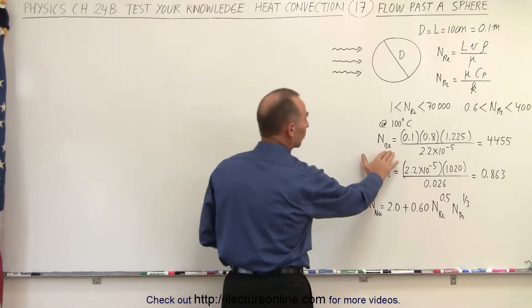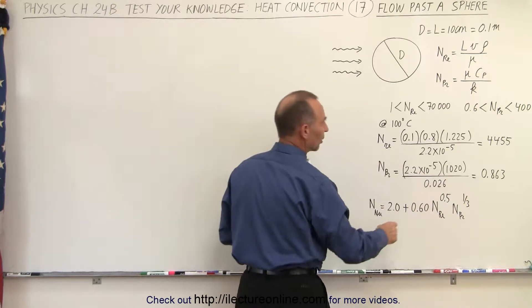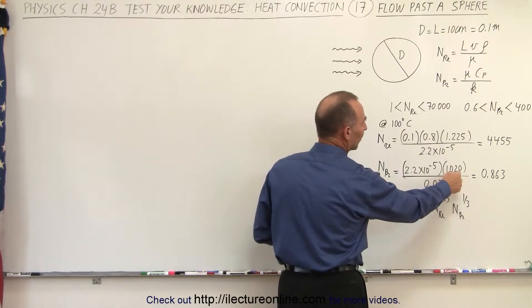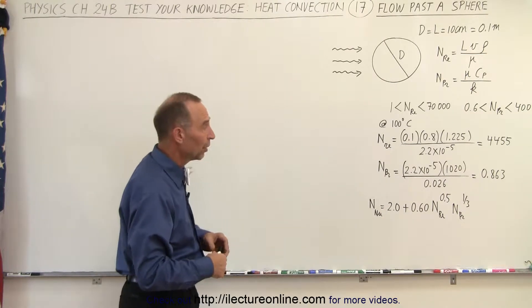Now here we calculate the Reynolds number and the Prandtl number based upon the values. Here we have the specific heat of air and the conductivity constant of air as well.